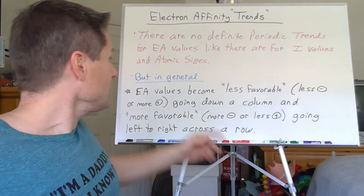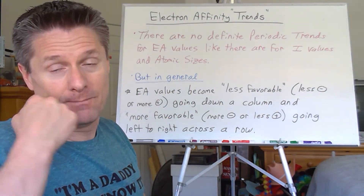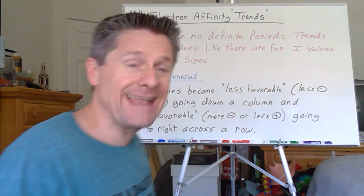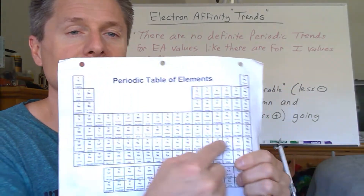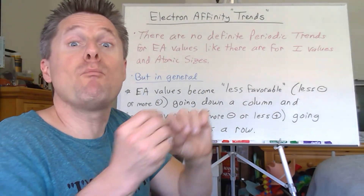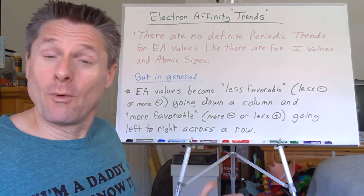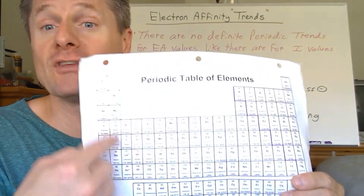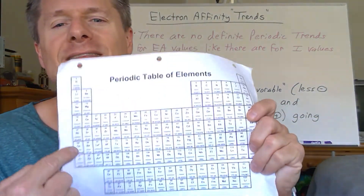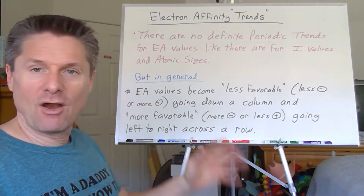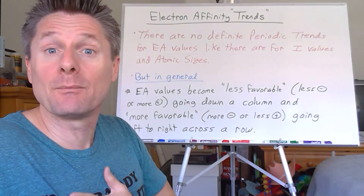But in general, if you're moving down a column, it gets less favorable to add electrons — meaning less negative or more positive. Moving across a row, electron affinity becomes more favorable. You can think of it this way: non-metals like to gain electrons to become anions, while metals would rather lose electrons to become like the prior noble gas, whereas non-metals want to gain electrons. So as you move across a row, it becomes more favorable or more negative. There are a lot of exceptions based on whether electron configurations are half-filled or totally filled.